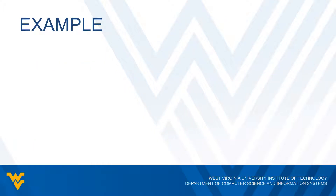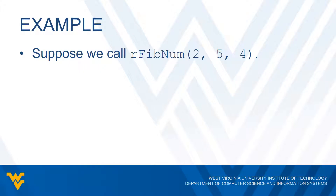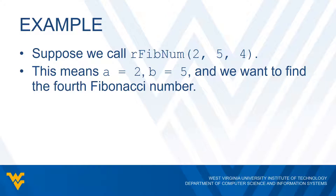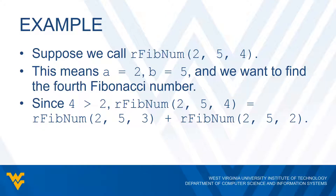Let's do an example. Let's say we want to call RFibNum with two, five, and four. So A is going to be two and B is going to be five — meaning the first two numbers of the sequence are two and five — and we want to find the fourth Fibonacci number. Since four is greater than two, we have to apply our recursive definition. To get RFibNum(2, 5, 4), we need to call RFibNum(2, 5, 3) and RFibNum(2, 5, 2), then take those results and add them together.